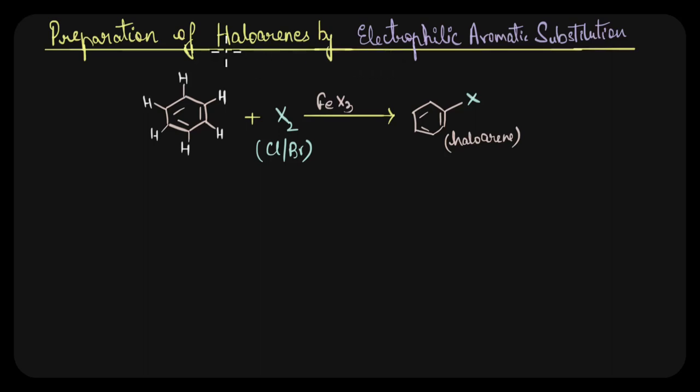In this video we are going to discuss how to prepare haloarenes by electrophilic aromatic substitution reaction. As the name suggests, we are substituting a hydrogen atom with a halogen atom to give haloarene. But the interesting thing is that the halogen like chlorine or bromine is not sufficiently electrophilic to react with benzene.